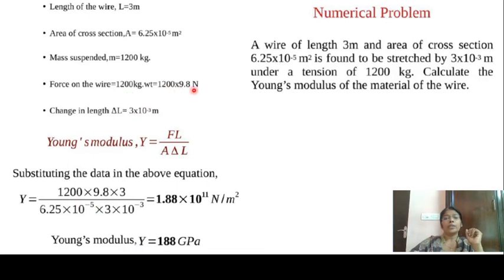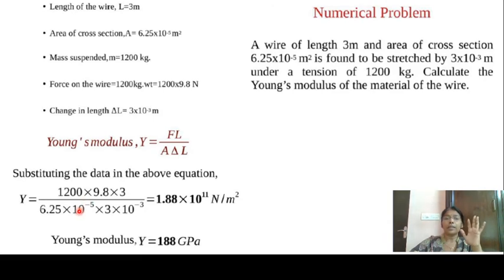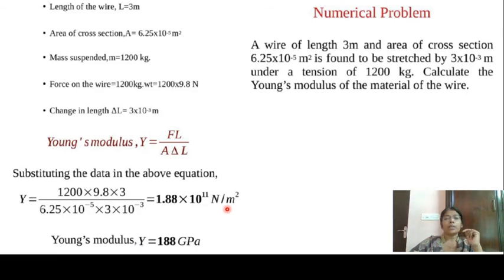Using Y equals FL/(AδL), with F equal to mg equal to 1200 × 9.8, L equal to 3 m, A equal to 6.25 × 10⁻⁵ m², and δL equal to 3 × 10⁻³ m, we substitute and calculate Young's modulus in SI units of Newton per meter square, which can also be expressed in GPa.